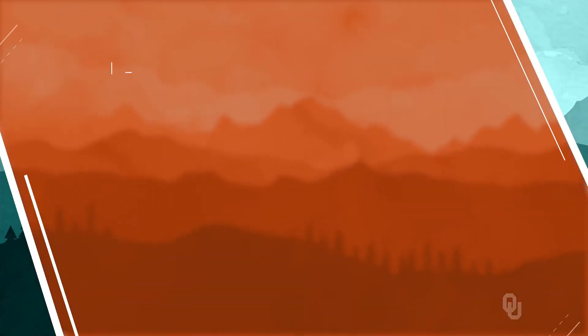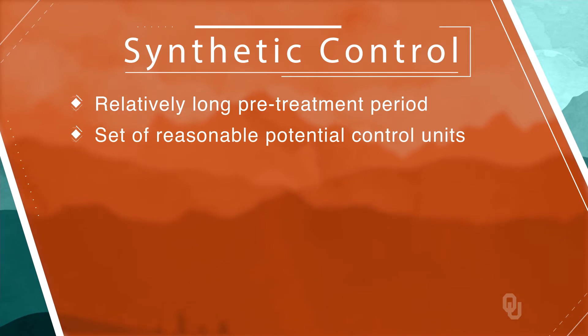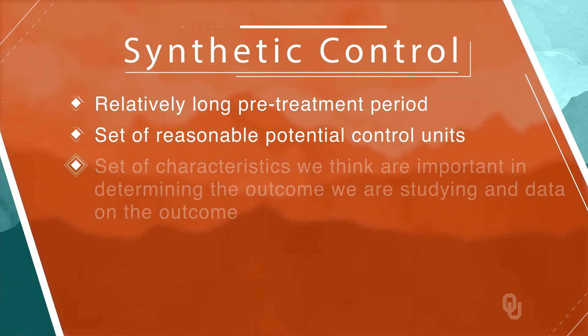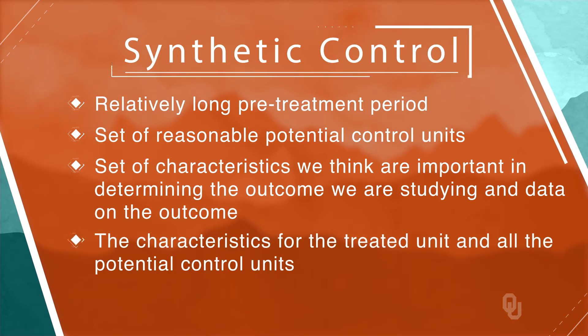Once we have a good synthetic control, we simply compare the path of Oklahoma after 2001 with the path of the synthetic Oklahoma generated by our control. Assuming the only difference between the two is due to the right-to-work law, our estimated treatment effect of the law is simply the difference in the two post-2001 time paths. This is somewhat similar to a difference-in-difference approach. To use this technique, we need a relatively long pre-treatment period, a set of reasonable potential control units, a set of characteristics we think are important in determining the outcome we are studying, and data on the outcome and characteristics for the treated unit and all the potential control units.